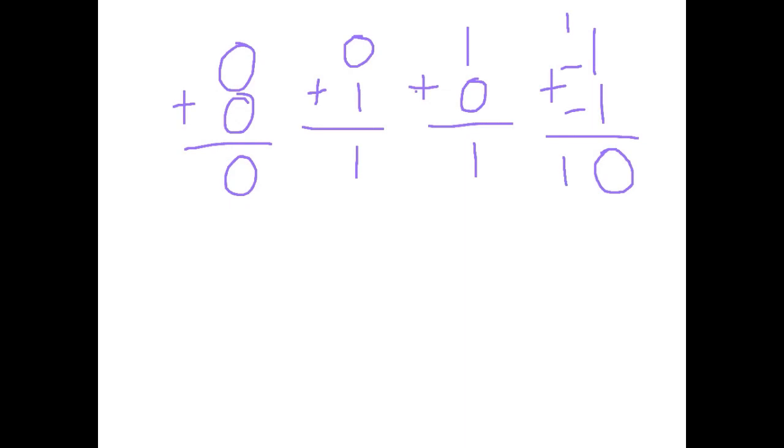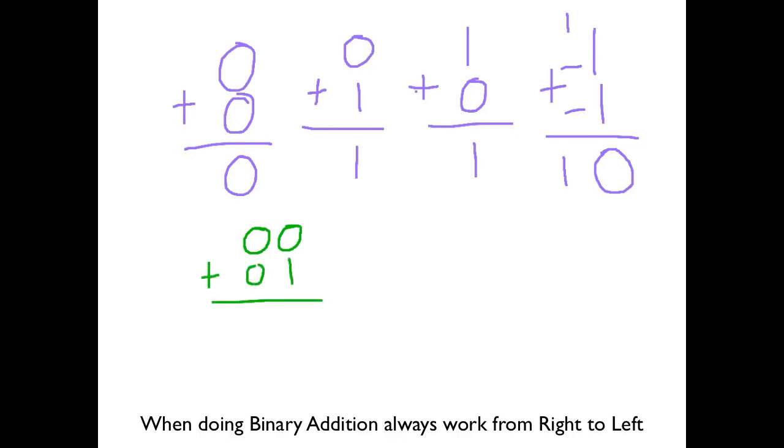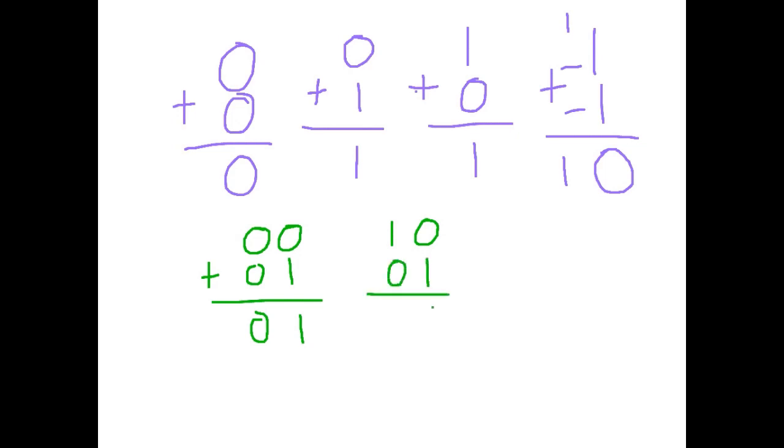If we have a look at something using two sets of digits, let's try adding together 0, 0 plus 0, 1. A 0 and a 1 is a 1, and a 0 and a 0 is 0. Another combination, we've got 1, 0 and 0, 1. 0 and a 1 is 1, a 1 and a 0 is also 1.